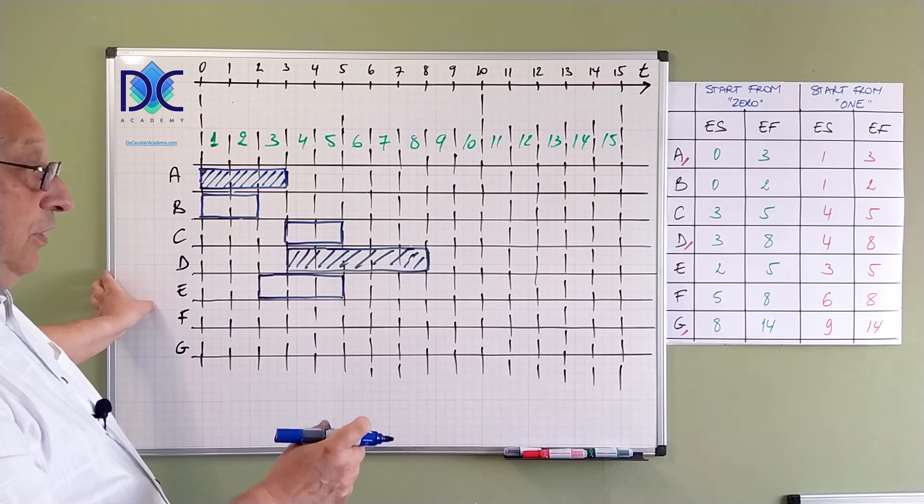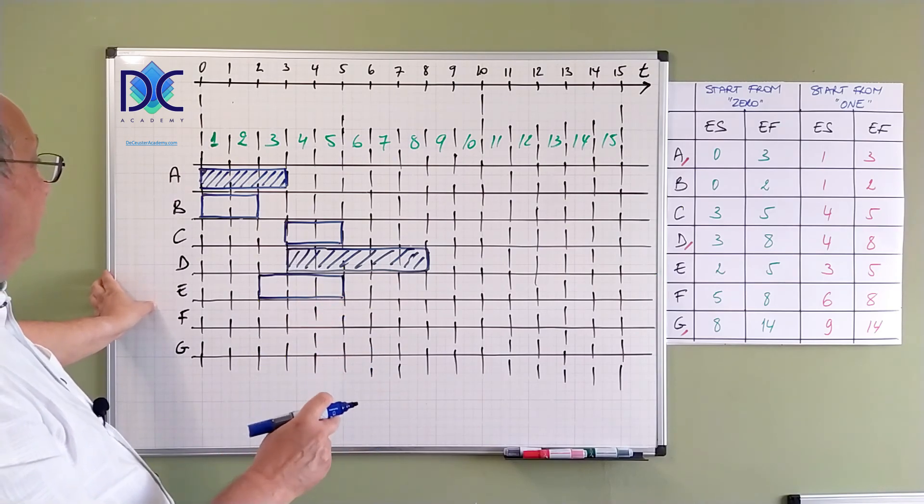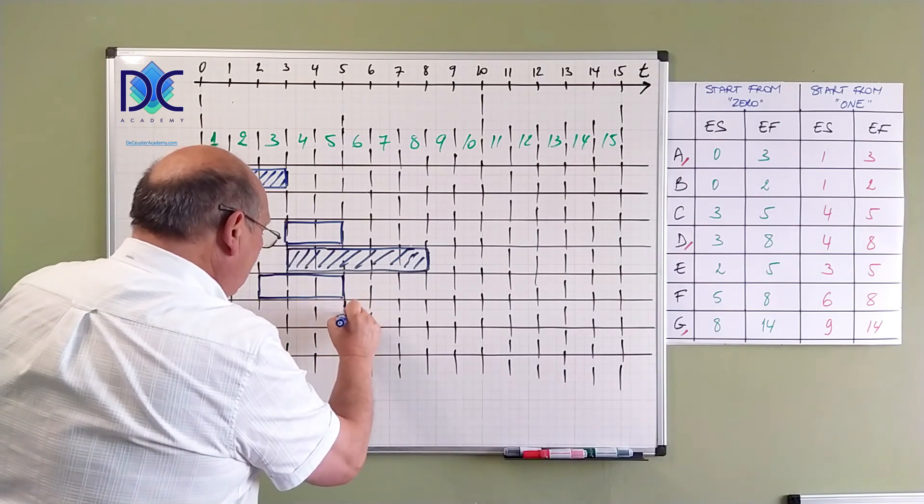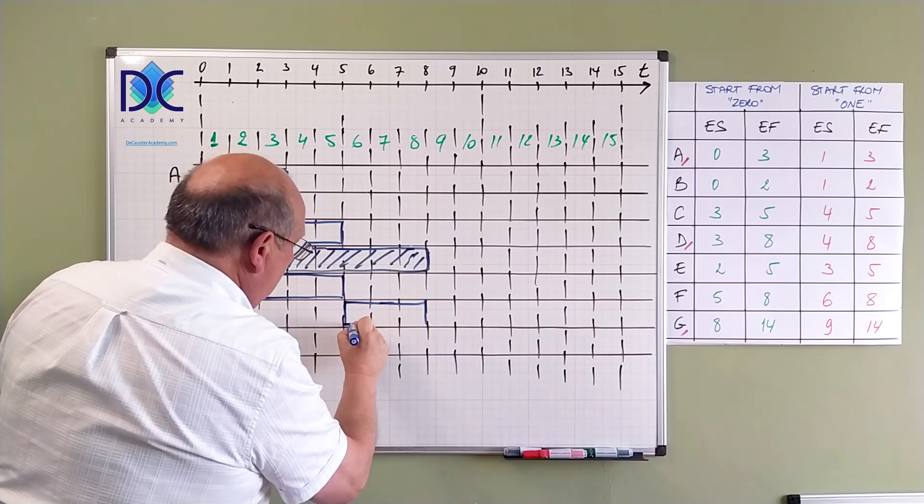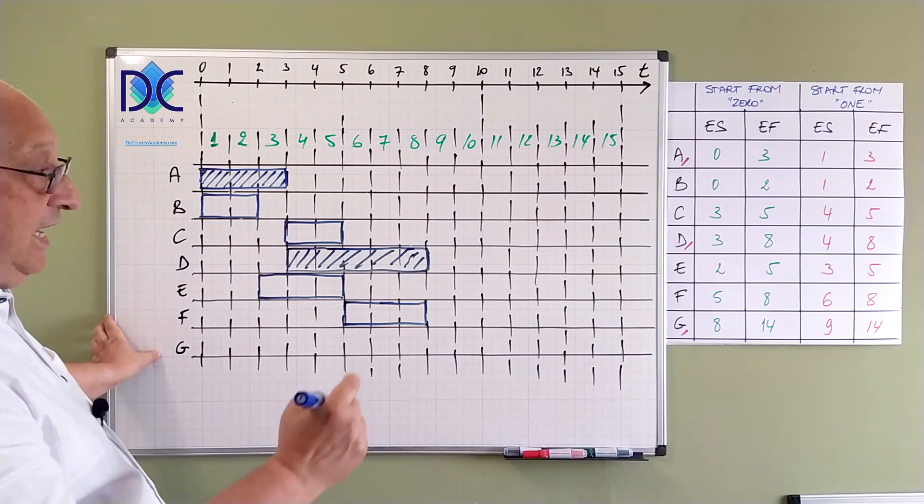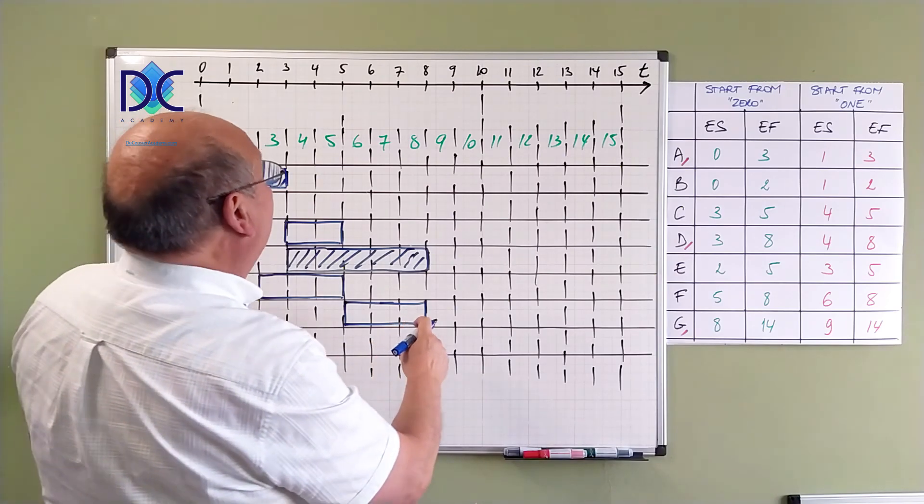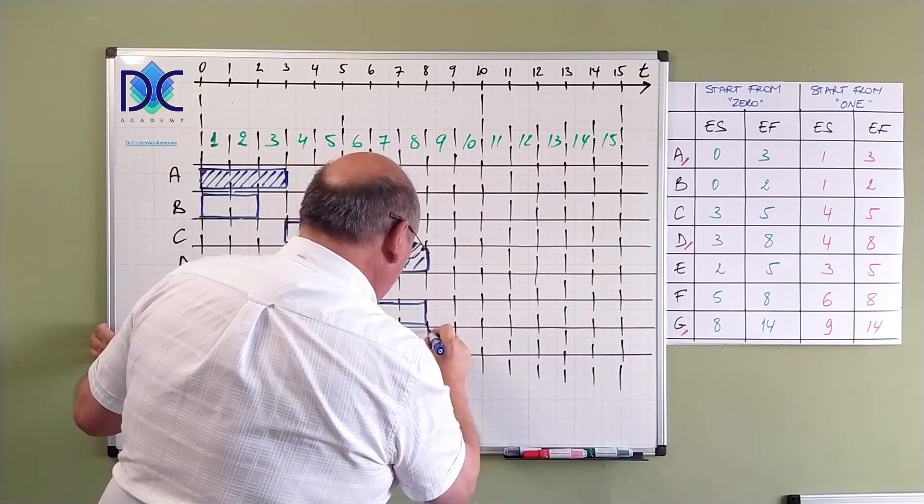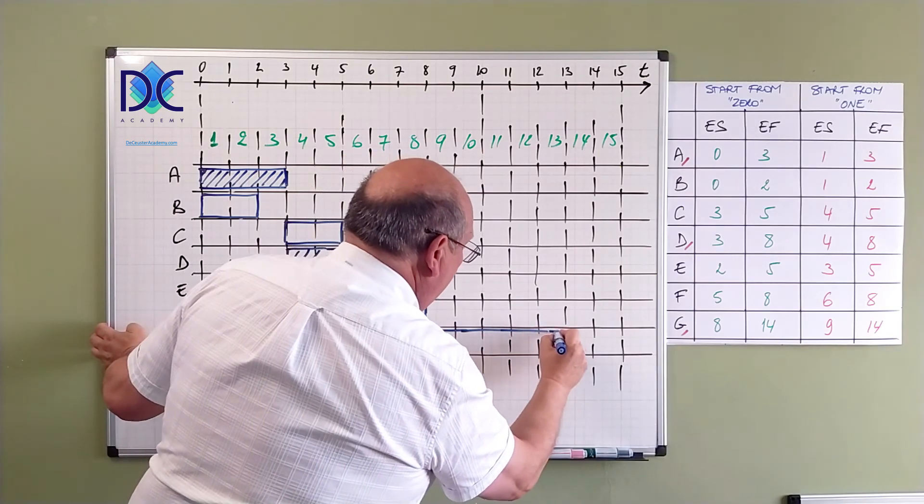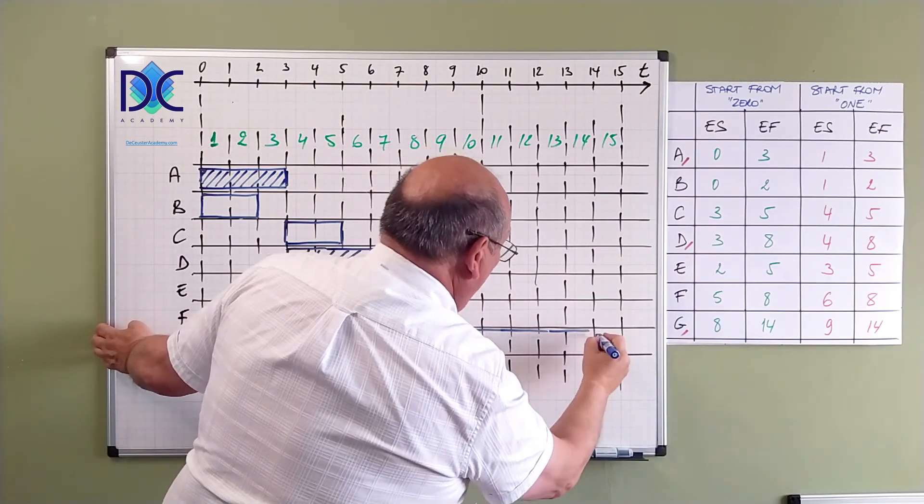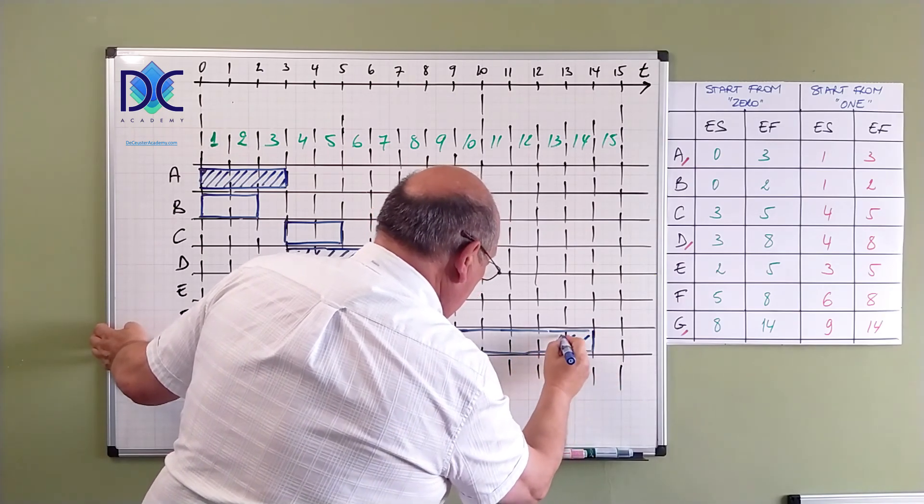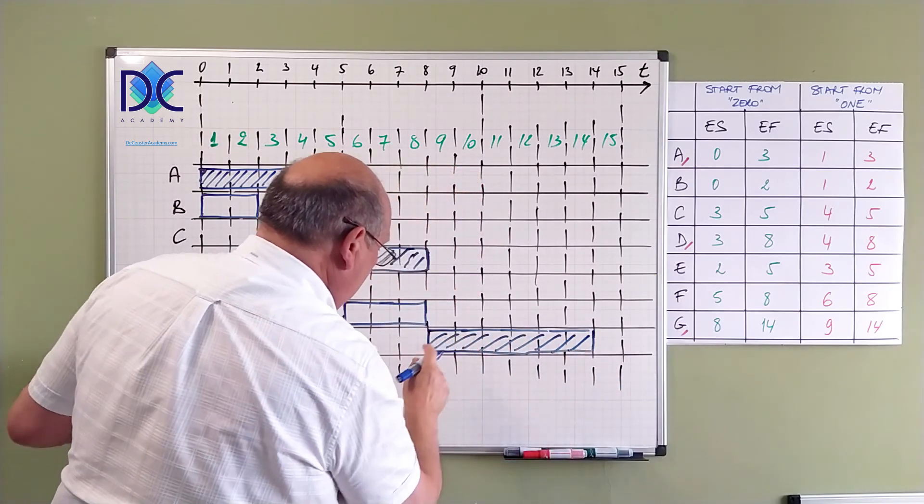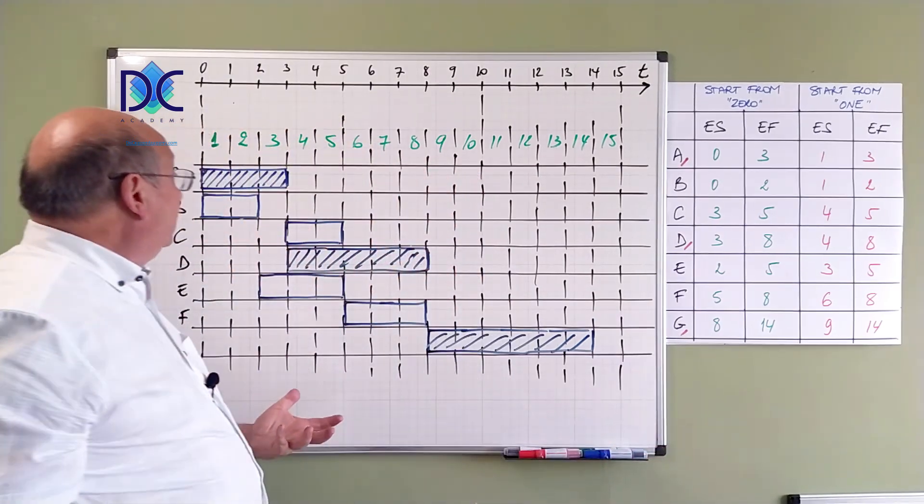And then finally, we have F and G. F from 5 till 8. And the last one, G, is from 8 till 14. We have 8 till 14 here, which is again critical.